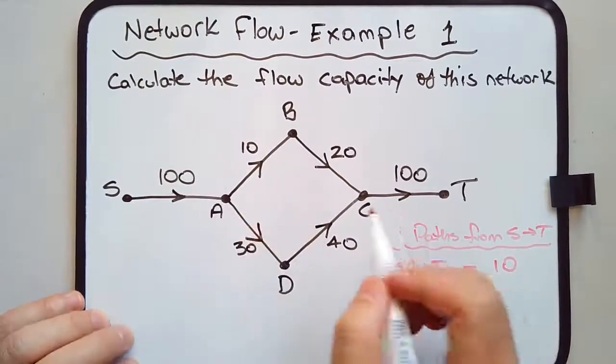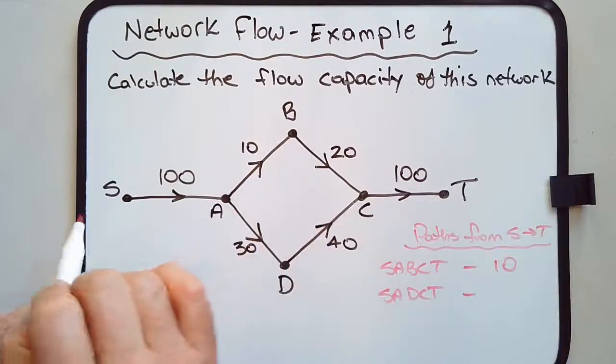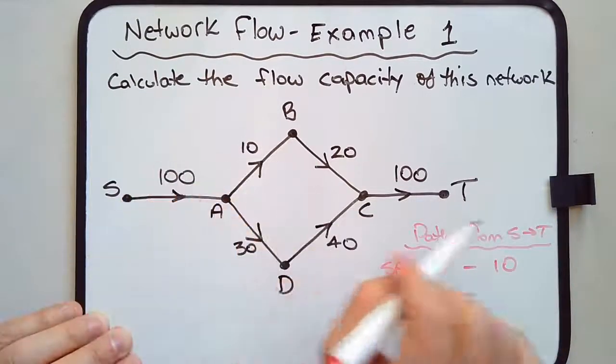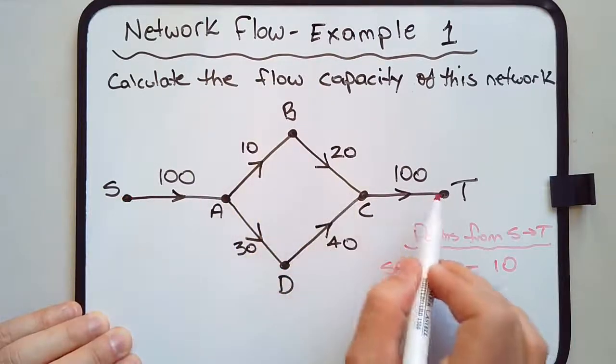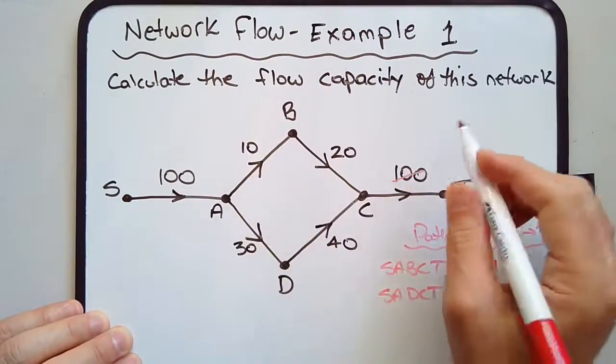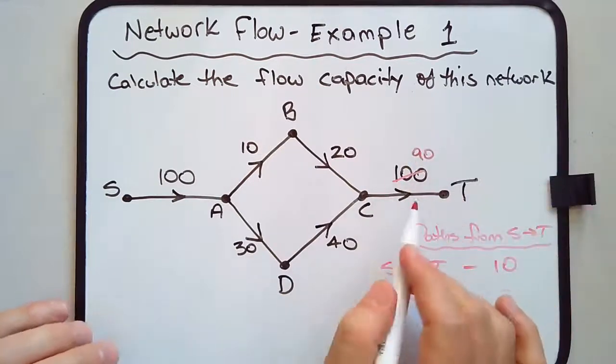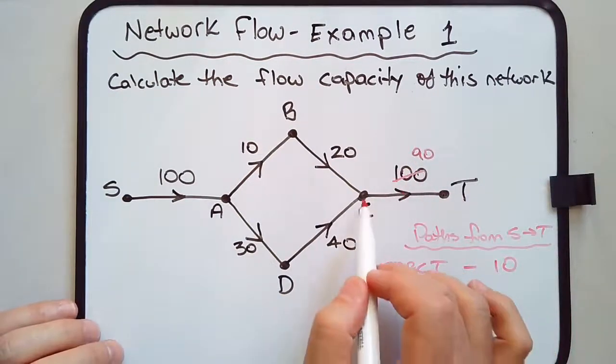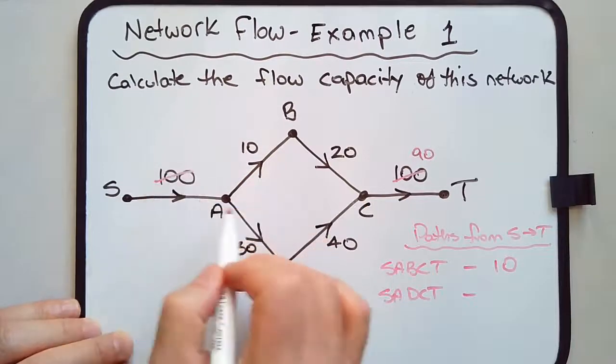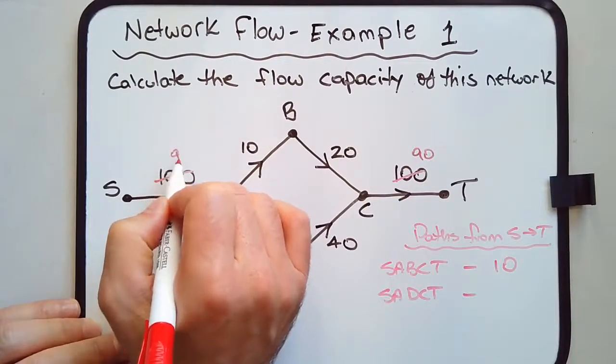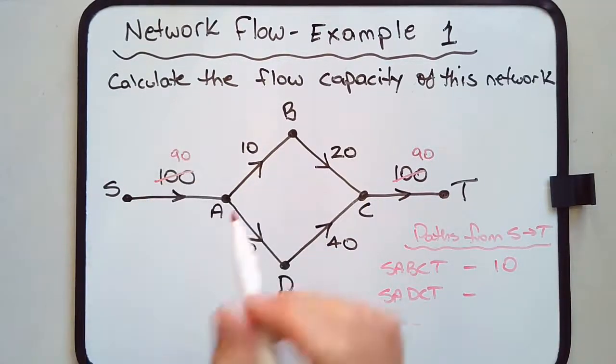Now, along this path, we're flowing 10 litres. What we do is subtract 10 from all of these capacities because we've used up 10 litres. For example, out of the 100 from CT, we've used 10. From SA, we've also used up 10 litres.